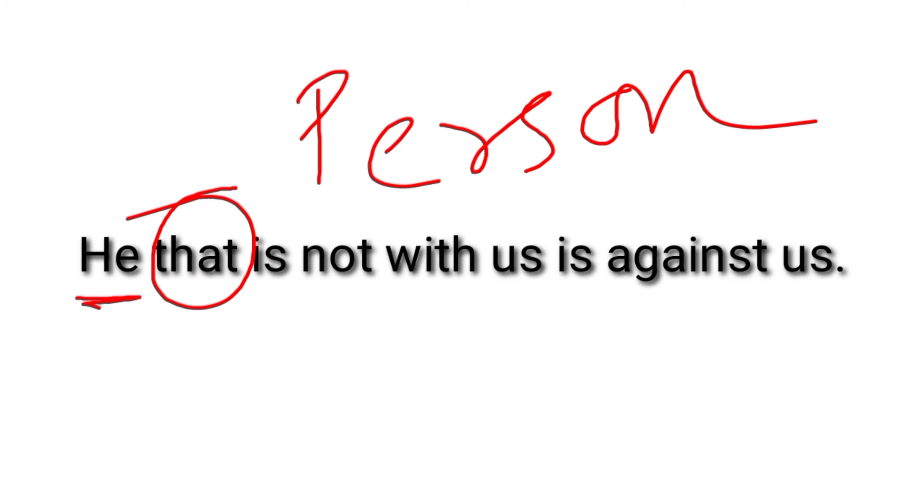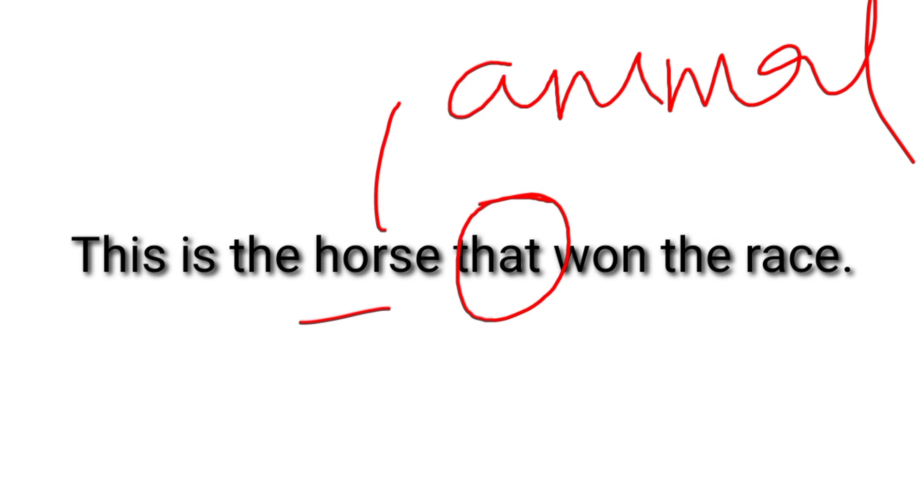That is a relative pronoun used for persons, animals, and things. For example: he that is not with us is against us — here that refers to a person. This is the horse that won the race — here that refers to an animal. This is the house that Jack built — here that refers to a thing. In this way, all relative pronouns refer to a noun that has been used previously in the sentence.